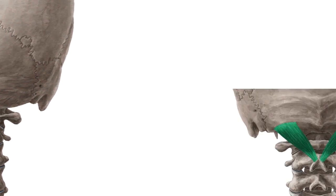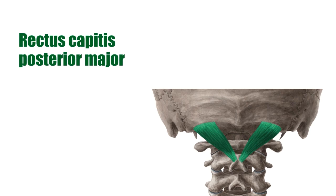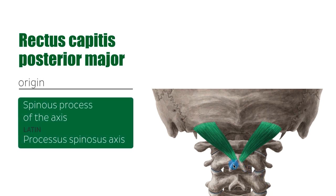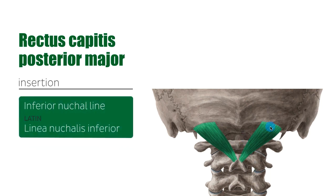We now move on to the next one highlighted in green: the rectus capitis posterior major. You have one on each side, so two muscles. This muscle arises by a pointed tendon from the spinous process of the axis, the second cervical vertebra. It then inserts on the lateral part of the inferior nuchal line of the occipital bone, and the surface of the bone immediately below the line.